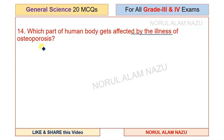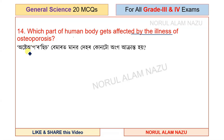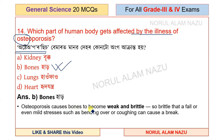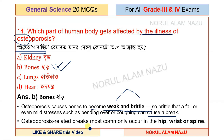Which part of the human body is affected by Osteoporosis? Osteoporosis affects the bones, causing them to become weak and brittle — so brittle that a fall or even mild stresses such as bending or coughing can cause a fracture. Osteoporosis most commonly occurs in the hips, joints, and spine.